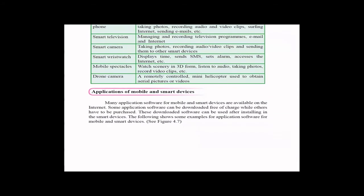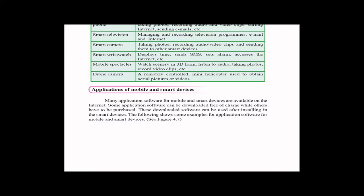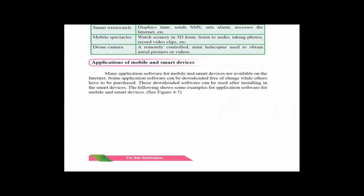Then comes the applications of mobile and smart devices. There are so many applications available. Some things are open source, that means you can freely download. But some things you have to purchase, you have to pay the license. After you purchase or download it, you can just install it and use it. Here they have given some different kind of applications which are specifically available for mobile and smart devices.